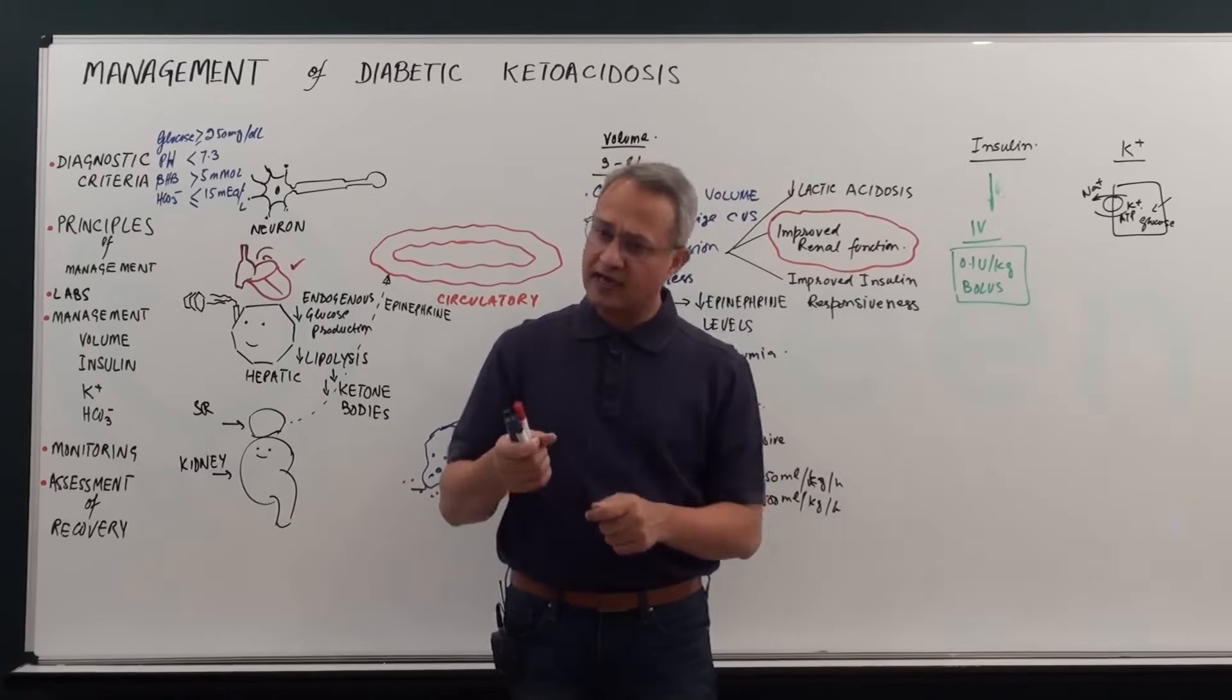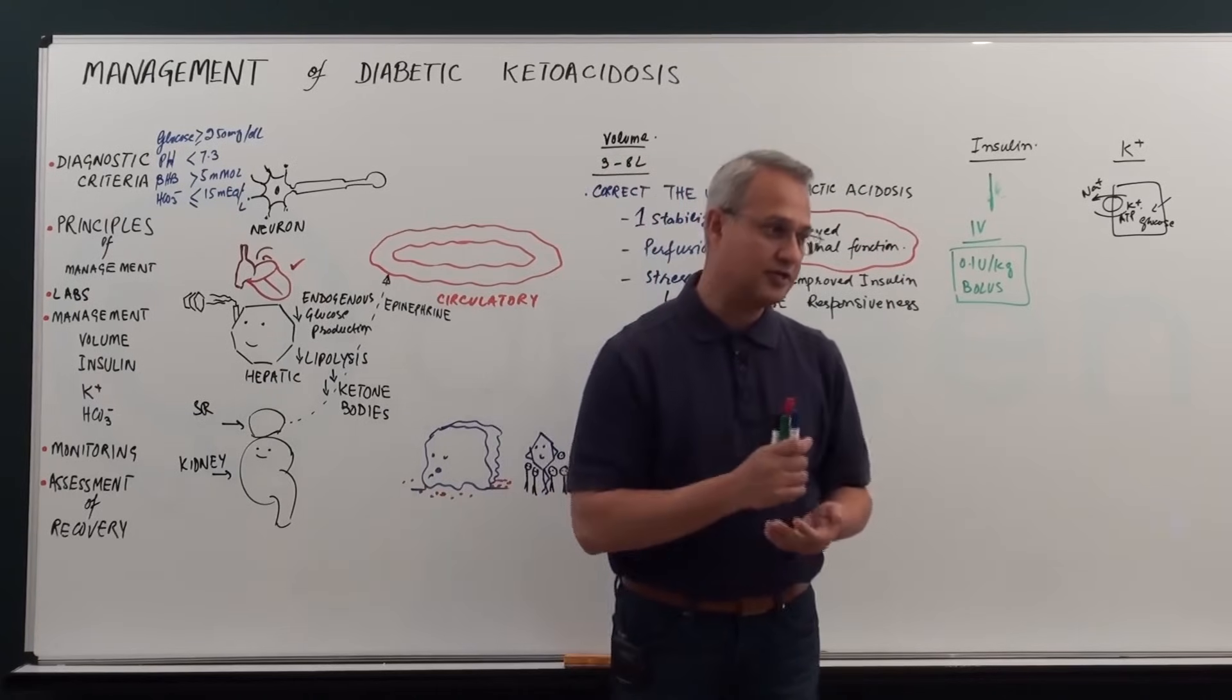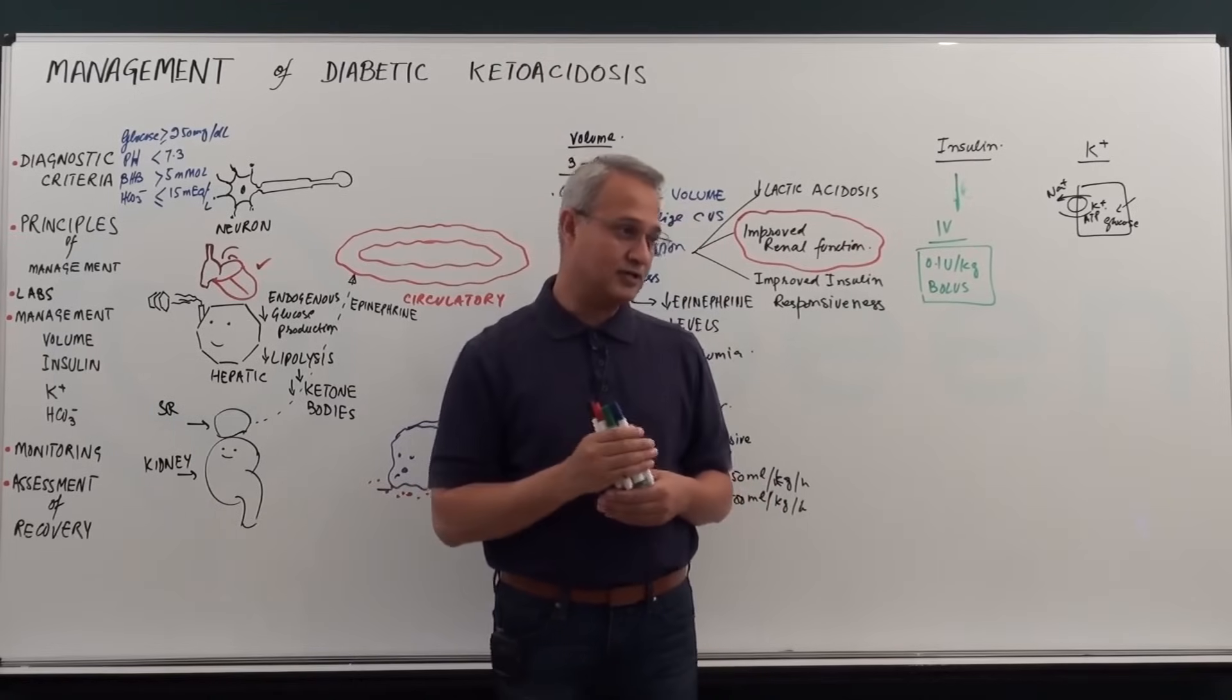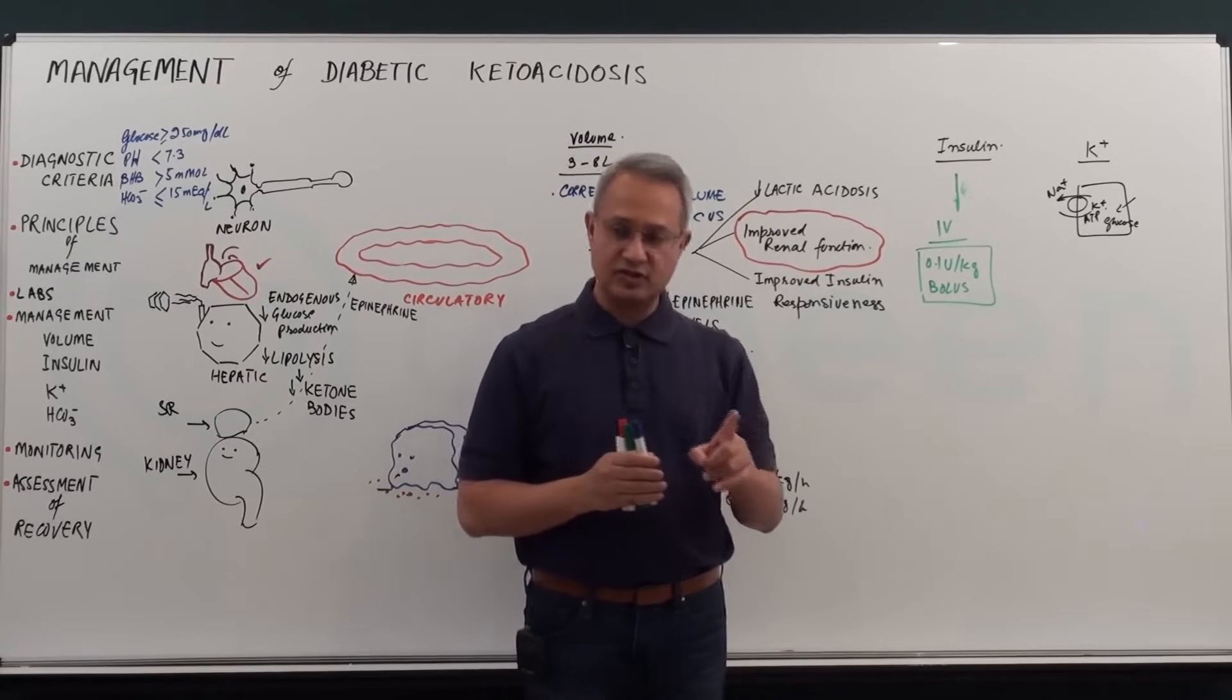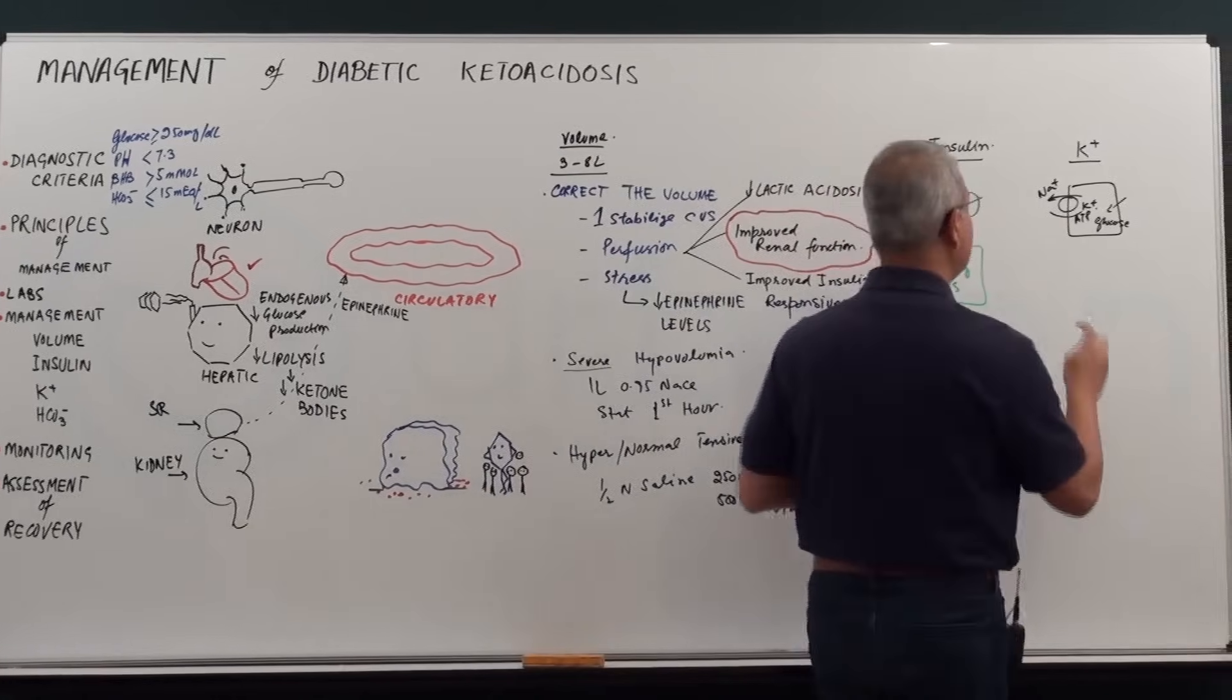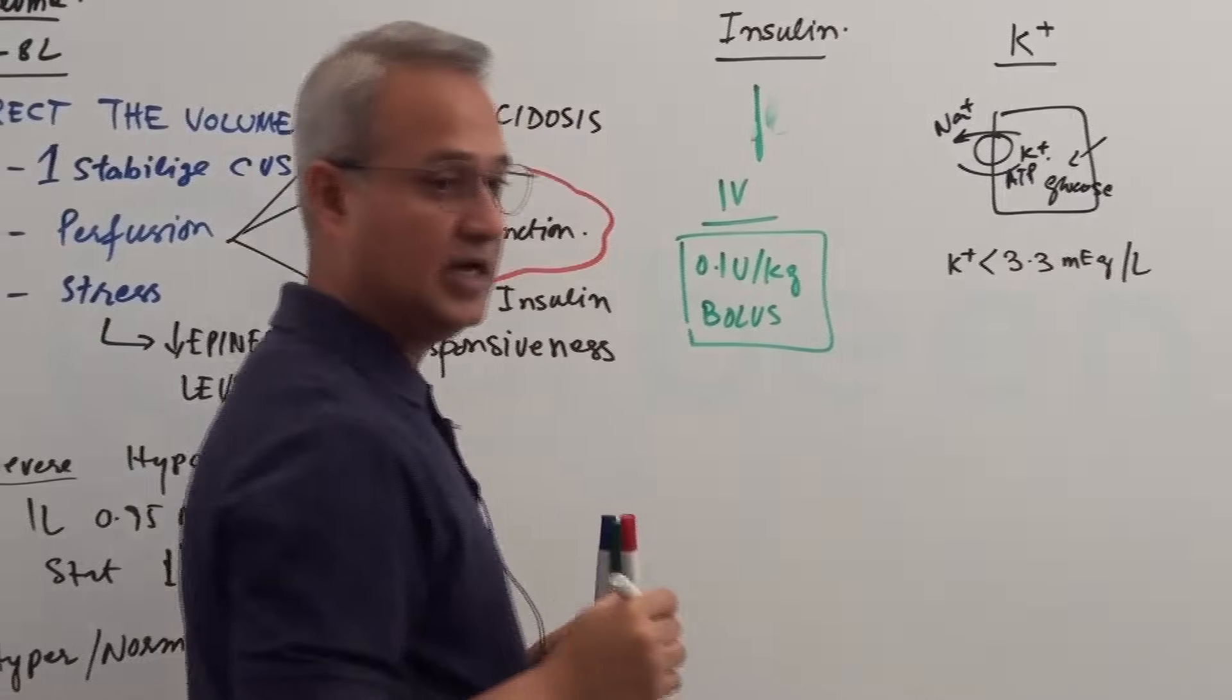So that means before you hang up insulin, the patient is here. What have you done so far? You put one liter of normal saline. Now you're getting ready to put insulin. First you see what are the labs, and the labs are going to tell you what is the potassium level. And if the potassium level is less than 3.3 milliequivalents per liter, then you don't give insulin.